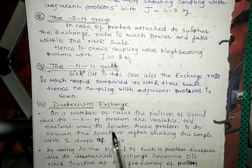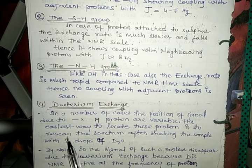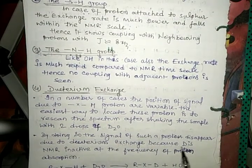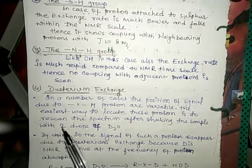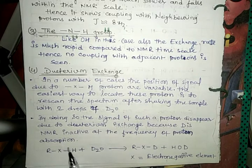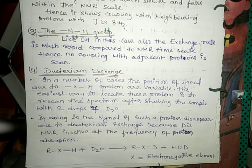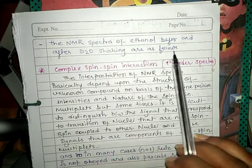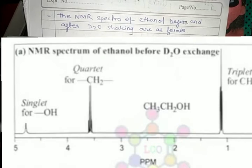Another type is deuterium exchange. In a number of cases, the positions of signals due to XH protons are variable. The easiest way to locate these protons is to rescan the spectrum after shaking the sample with two drops of D2O. By doing so, the signal of such protons disappears due to deuterium exchange, because deuterium is NMR-inactive at the frequency of proton absorption. Here X is an electronegative element and D is deuterium. The NMR spectra of ethanol before and after D2O shaking illustrate this effect.